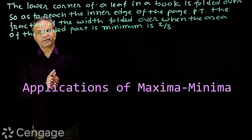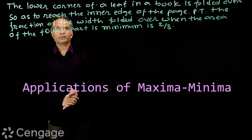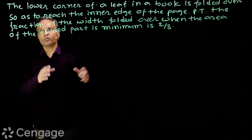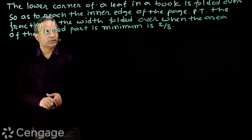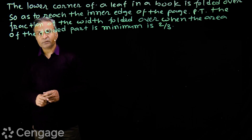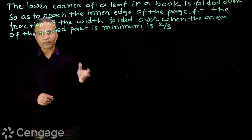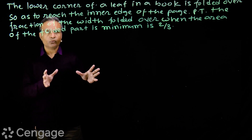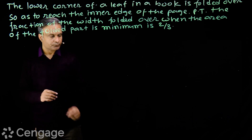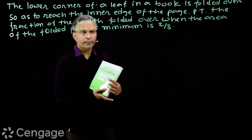Now look at this very interesting question. The lower corner of a leaf in a book is folded over so as to raise the inner edge of the page. Prove that the fraction of the width folded over when the area of the folded part is minimum is 2 upon 3.